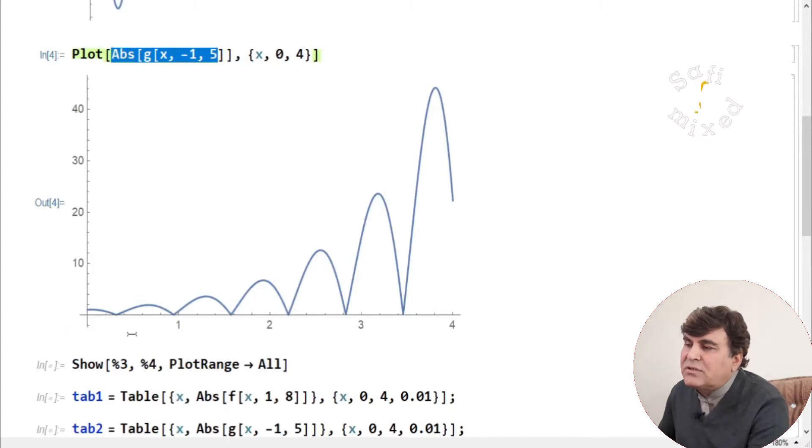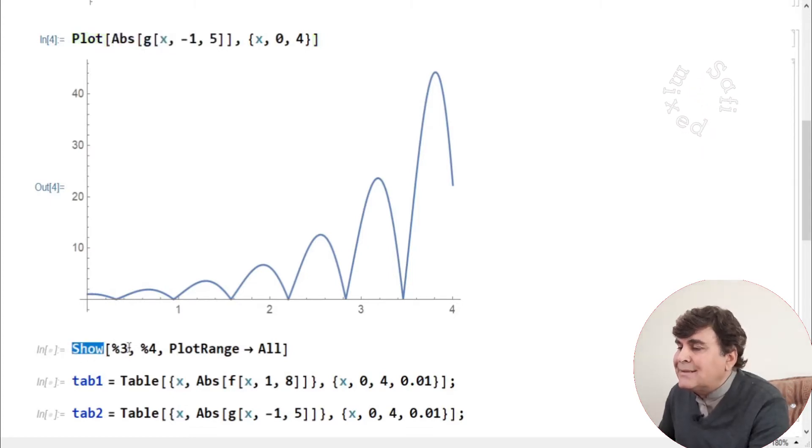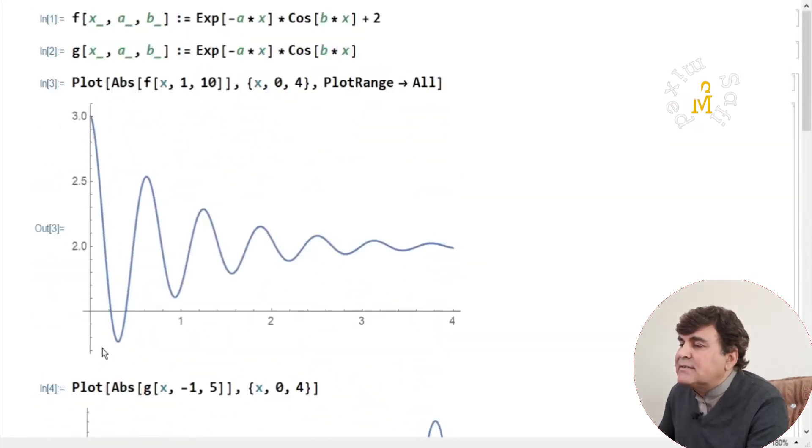If I plot the absolute value of G function with same abscissa, the ordinate value of the function varies from 0 to 40. So there is a big difference between the two ordinate values. I can plot them both on a single frame by using the show function. Inside the argument of the show function I put %3 and %4, where the 3 and 4 correspond to the output values of these plots.